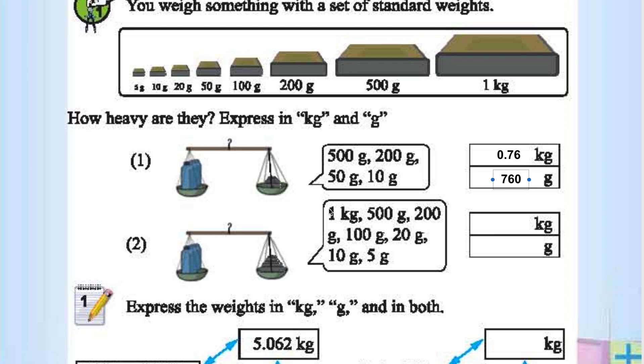What about this? 1 kg, 500 grams, 200 grams, 100 grams, 20 grams, 10 grams, 5 grams. 500 plus 200 is 700, 700 plus 100 is 800, 820, 830, 835.